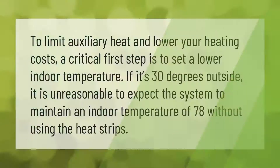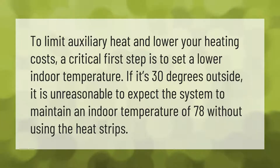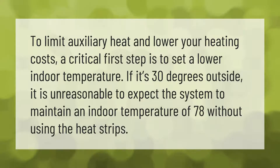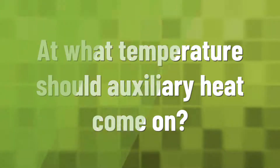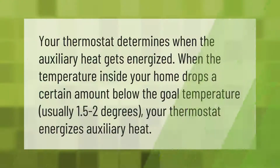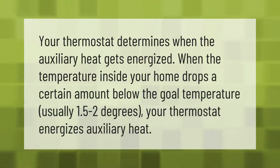To limit auxiliary heat and lower your heating costs, a critical first step is to set a lower indoor temperature. If it's 30 degrees outside, it is unreasonable to expect the system to maintain an indoor temperature of 78 without using the heat strips. Your thermostat determines when the auxiliary heat gets energized — when the temperature inside your home drops a certain amount below the goal temperature, usually 1.5 to 2 degrees, your thermostat energizes auxiliary heat.